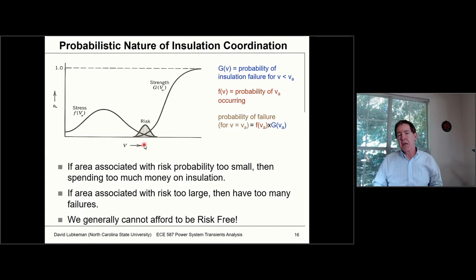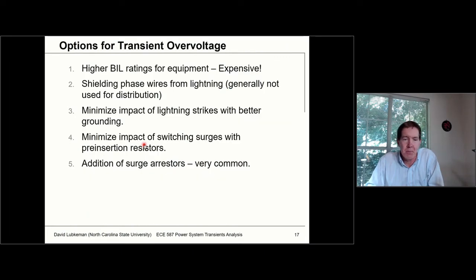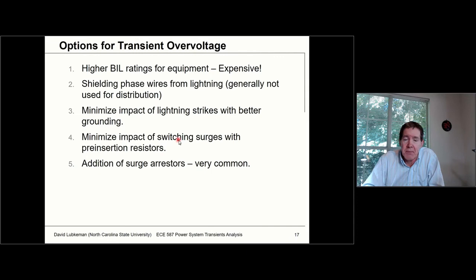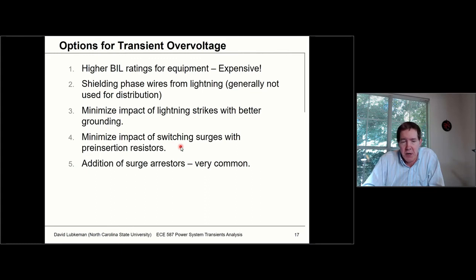As for protection options, you could use higher BIL ratings for equipment — but very expensive. You could put up shielding wires for lightning, though these are generally already there and turn out not to be effective for distribution. You could minimize the impact of lightning strikes by improving grounding — putting more ground stakes in the ground. You could put pre-insertion resistors in circuit breakers for energizing lines to minimize that impact. And then the next thing we're going to talk about is the addition of surge arrestors.